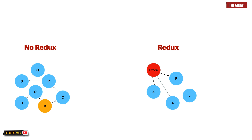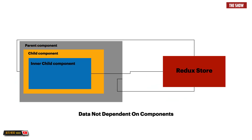For the application that uses Redux, when a component A initiates a change, it communicates straight to something we call the store in Redux. That store contains the state of the application, and then the store propagates that to all the other components that need that state. So we make a change in A, that change goes straight to the store, and the store sends the change to all other components. That is the difference between using Redux and not using Redux.